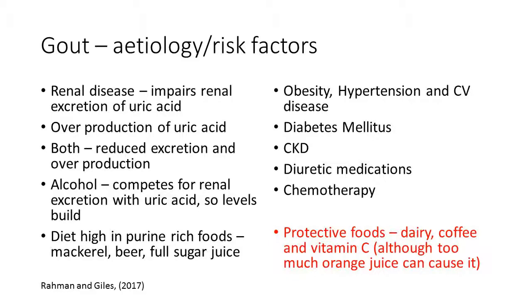Risk factors for gout include renal disease and impaired renal excretion of uric acid, overproduction of uric acid, alcohol consumption — which competes for renal excretion with uric acid — and a diet high in purine-rich foods, which is why it was called the rich man's disease. Obesity, hypertension, cardiovascular disease, diabetes mellitus, chronic kidney disease, diuretic medication, and chemotherapy are also risk factors. Protective foods include dairy, coffee, and vitamin C, although too much fructose from fruit juice can cause gout.